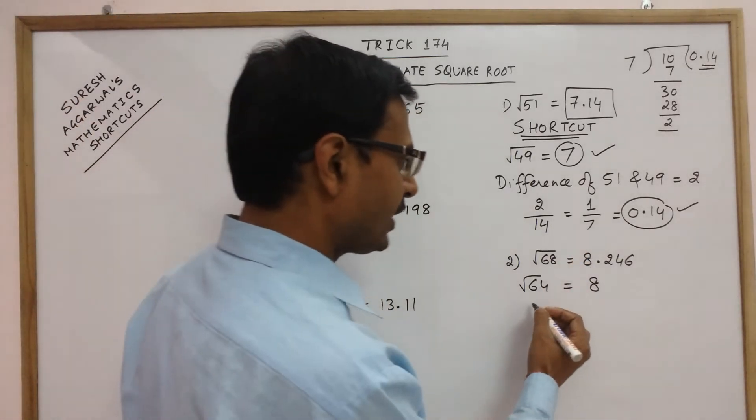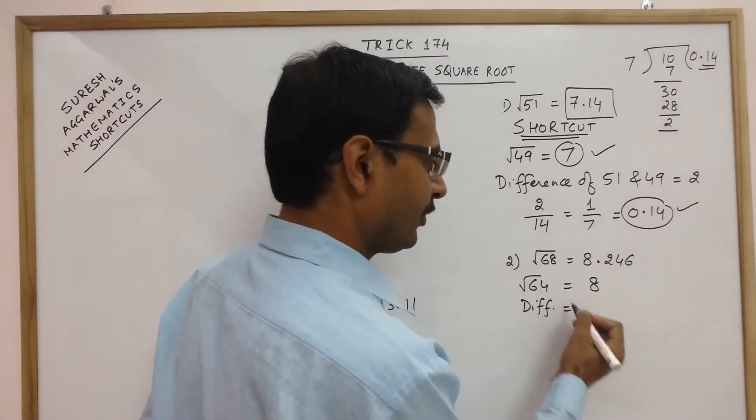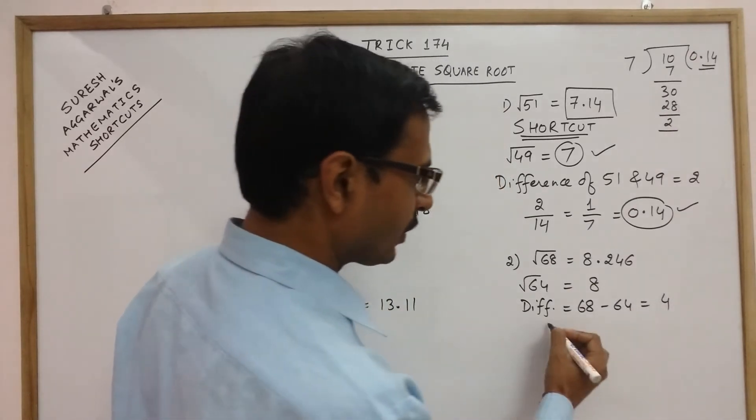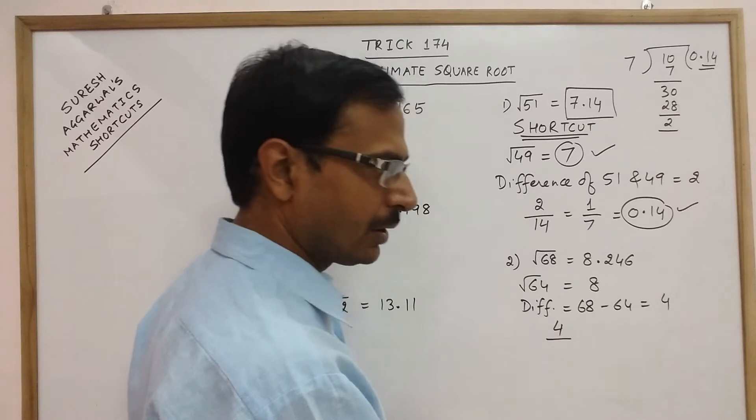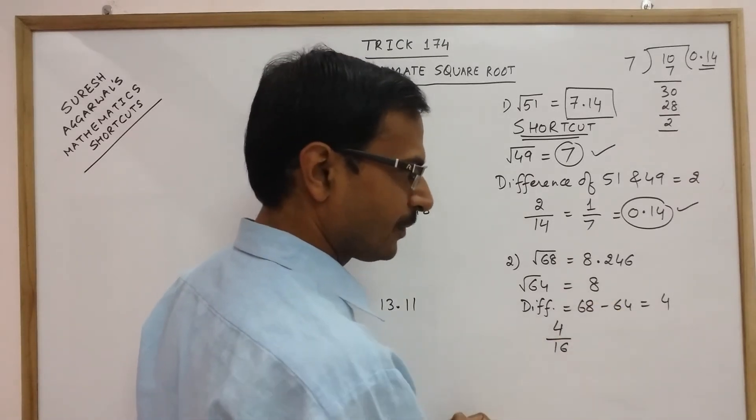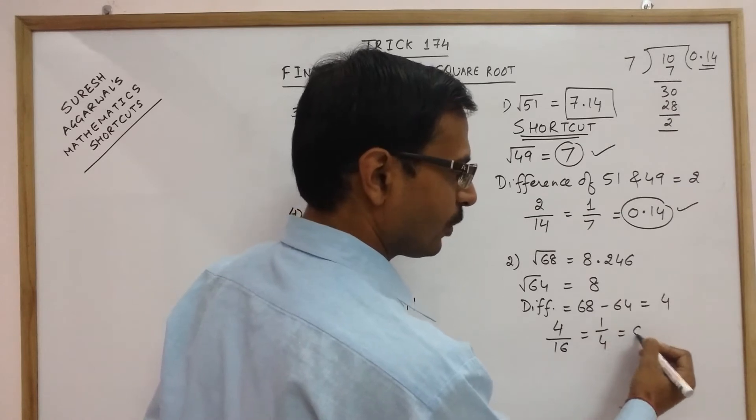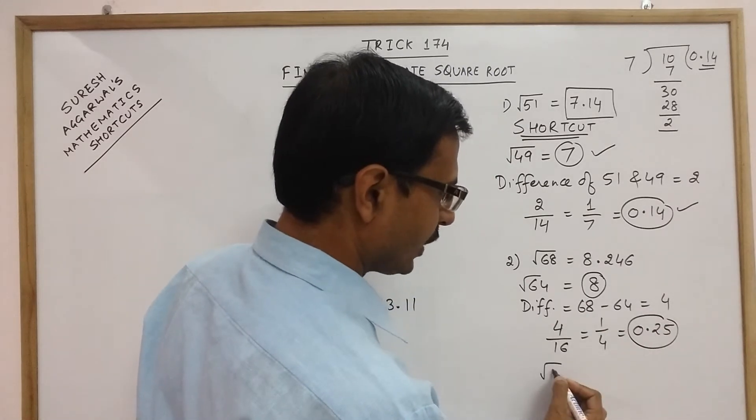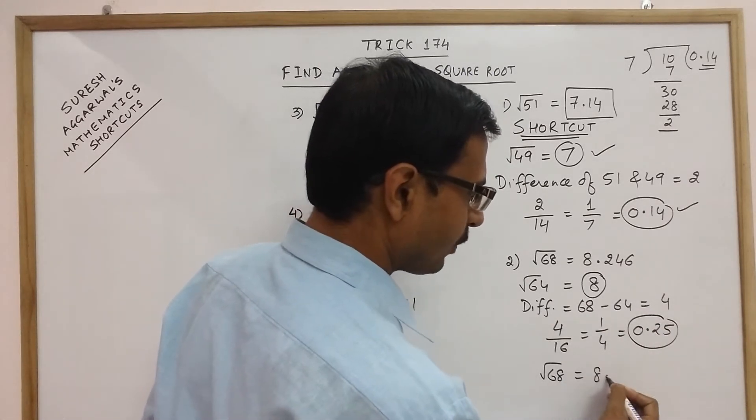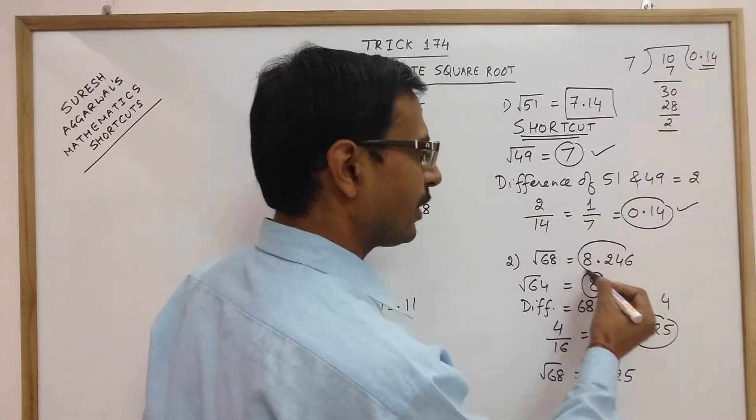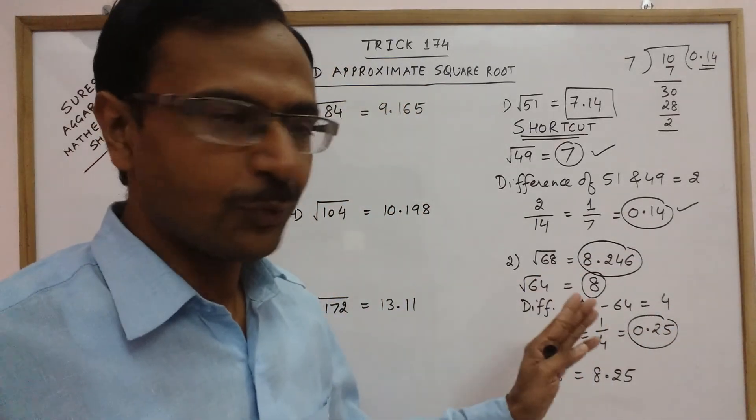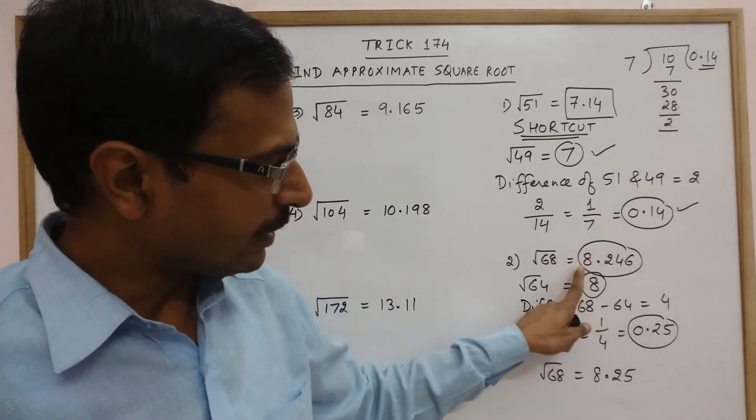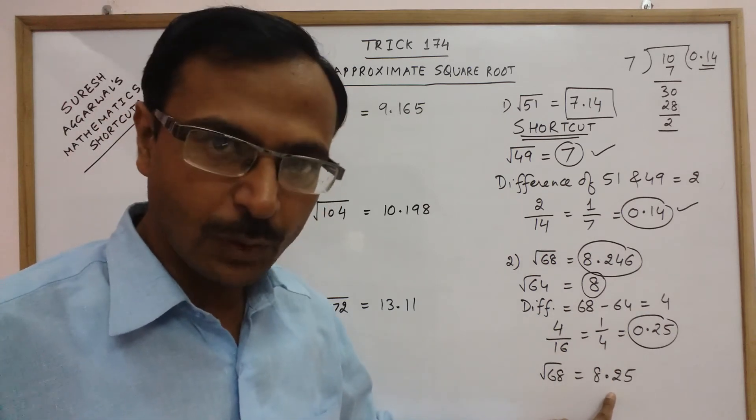And now take the difference of 68 and 64. This will give you 4. So other part of the answer is 4 upon double of this 16. So you have 1 upon 4 which is 0.25. So this gives you 8 and 0.25. Square root of 68 obtained is 8.25 which is very near to the perfect answer 8.246. See if you round this off to 2 decimal places you will get 8.25 which is the answer which we have got through this method.